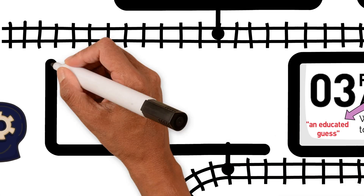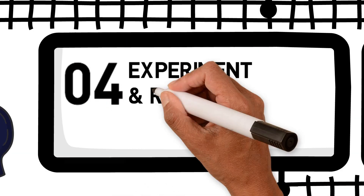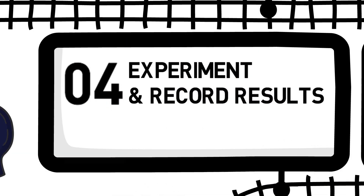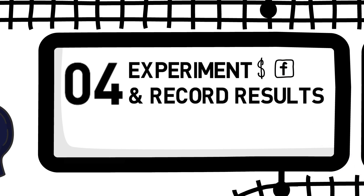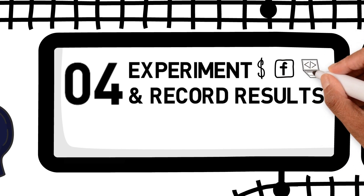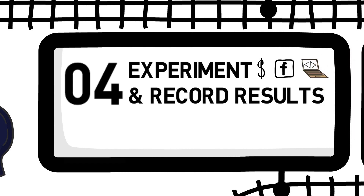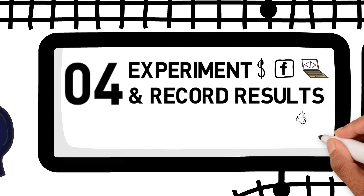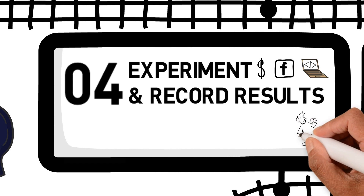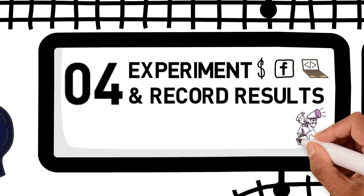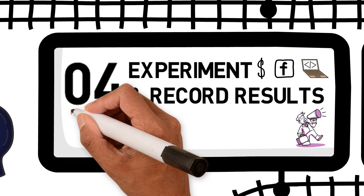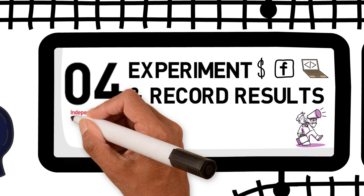Step four is experiment. Design your experiment and record the results. Depending on what your question is and your budget, there are all sorts of ways you can go about this. You could be testing advertising on Facebook to find what content most appeals to your market, running a beta test of an app you've developed, or trying out a new sales script. The key with any experiment you run is you need to have three things. You need to have an independent variable — that's what you're testing, like the new sales script or different email headlines.